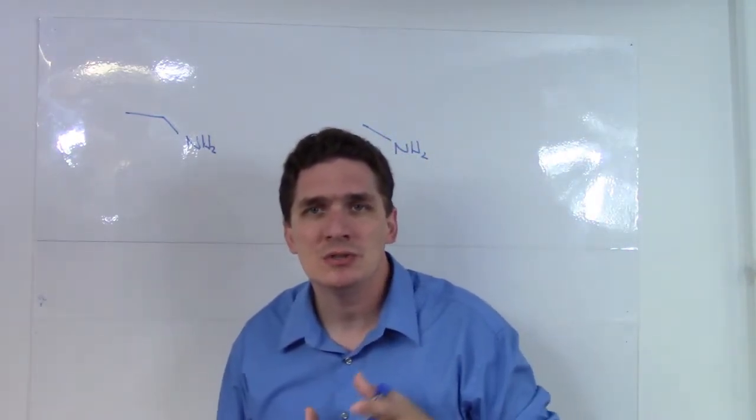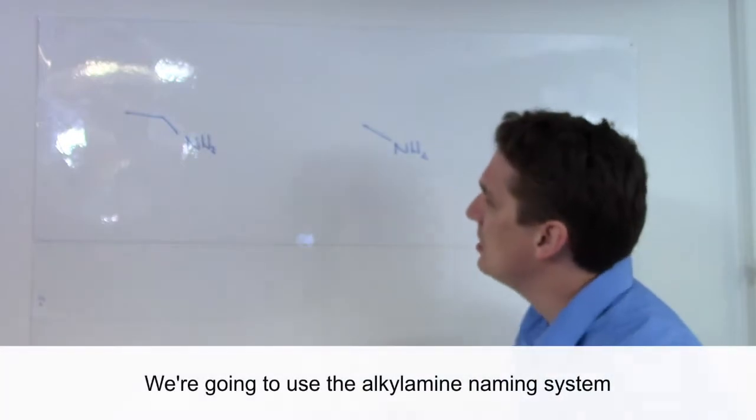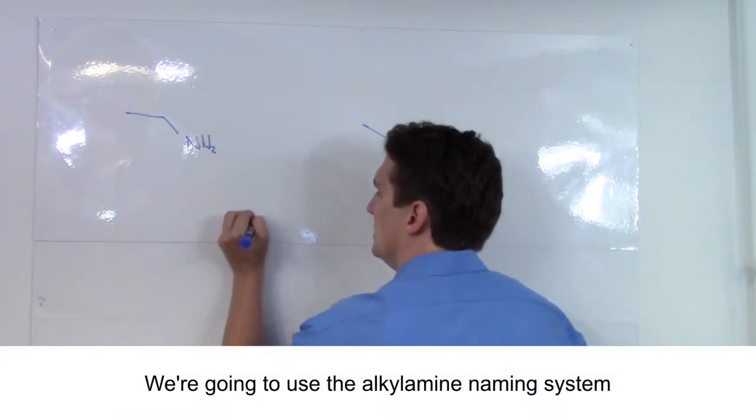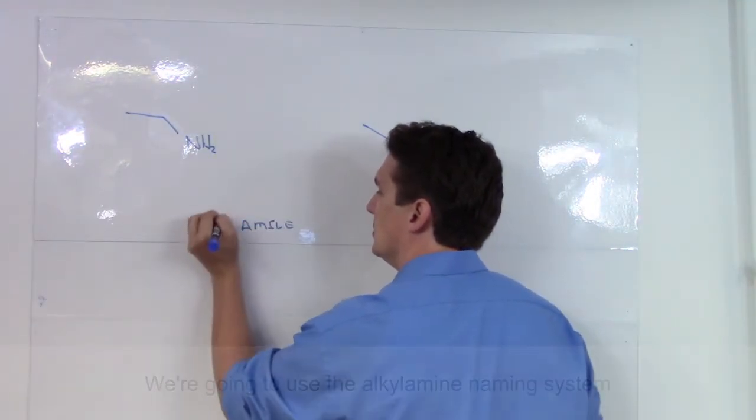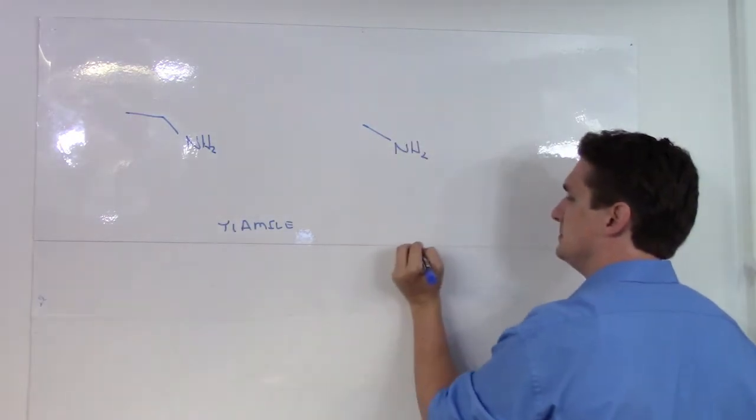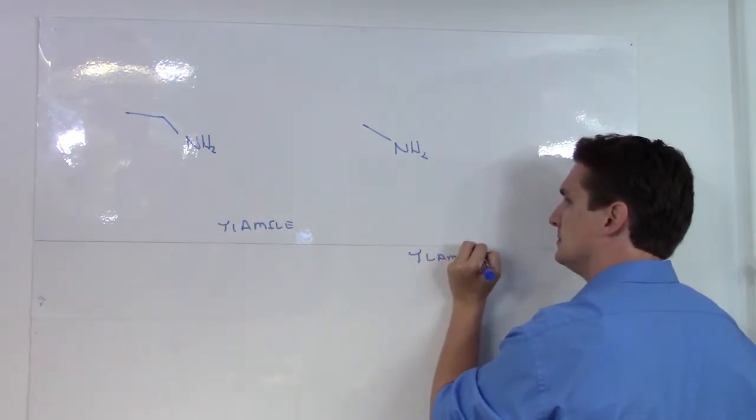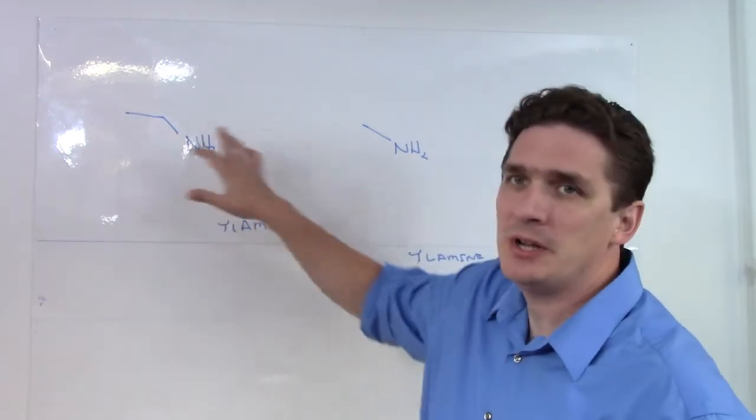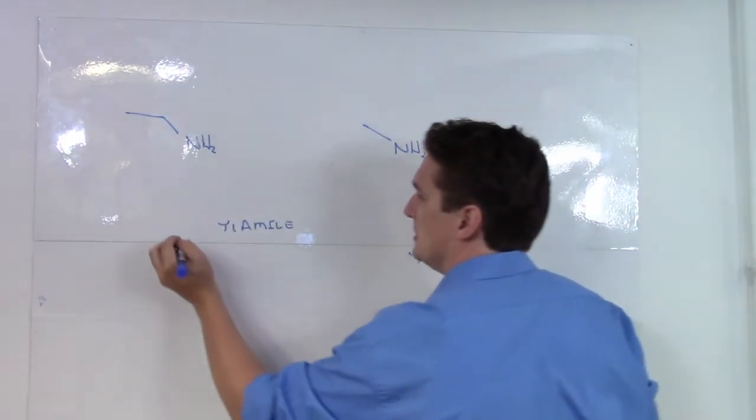So here we have an ethyl amine and a methyl amine. Now we're going to use the alkyl amine naming system, so all these are going to finish with yl amine. If it was just this branch and just this branch, we would call this ethyl amine and methyl amine.